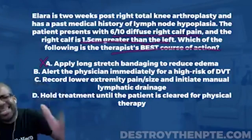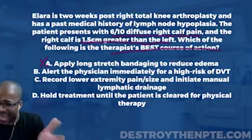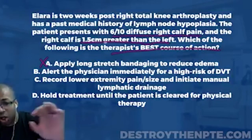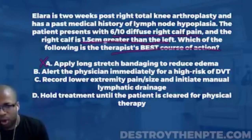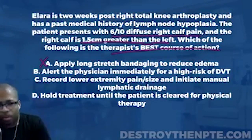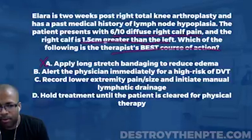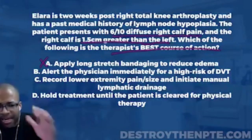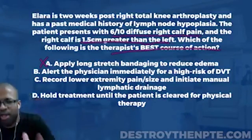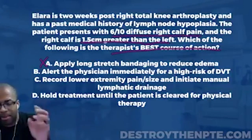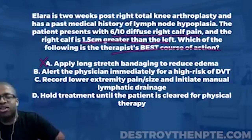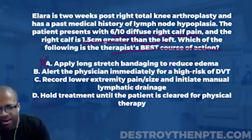You might say the patient has six out of ten diffuse right calf pain — isn't that consistent with DVT? But according to the Wells rule, you need localized tenderness along the deep venous system, not diffuse pain. So that is not a point either. Furthermore, at the end of the Wells rule, if an alternative diagnosis is as likely or more likely than DVT, you deduct two points from the score.